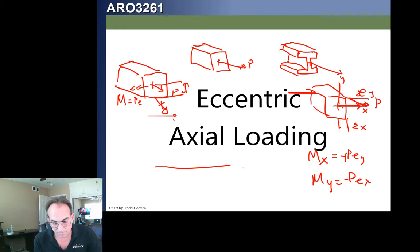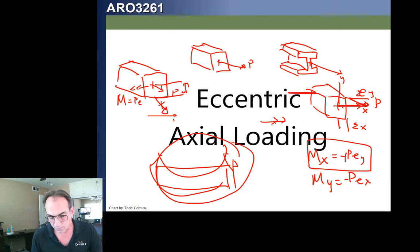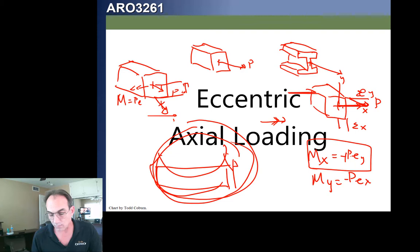When talking about beams, smiley-face bending is positive, which means compression on the top. This MX, which is positive for the X-axis, is actually negative if we're using beam sign convention. You have to be really careful with this nomenclature, because beam sign convention will often have a different sign than normal right-hand rule sign convention.